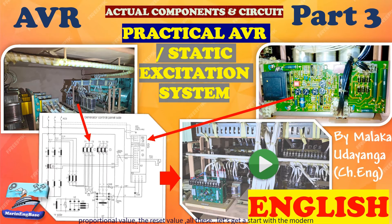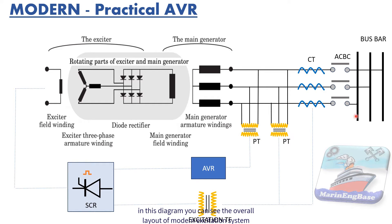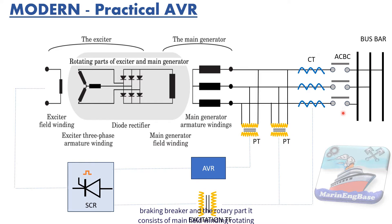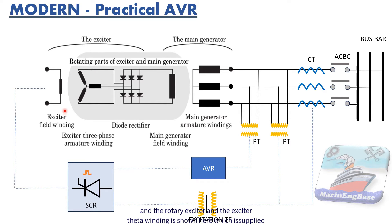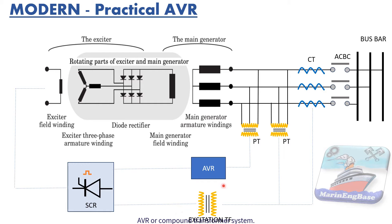Let's get started with the modern practical AVR. In this diagram, you can see the overall layout of a modern excitation system. This part shows the generator stator winding, which gives the output to the bus bar through the circuit breaker. The rotary part consists of the main field winding, rotating diode bridge, and the rotary exciter. The exciter stator winding is shown here, which is supplied through a SCR unit, excited by the AR operator AVR or compound transformer system.